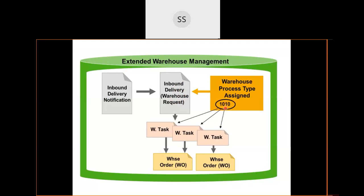Based on the warehouse process type and each line item of the delivery, warehouse tasks are created. There will be as many warehouse tasks as there are line items in the delivery. However, multiple warehouse tasks can be grouped together into one warehouse order — for example, two warehouse tasks into one warehouse order, or one warehouse task into one warehouse order.